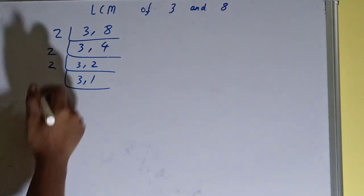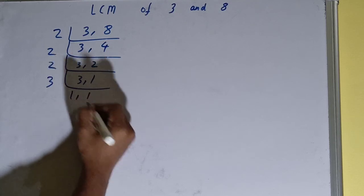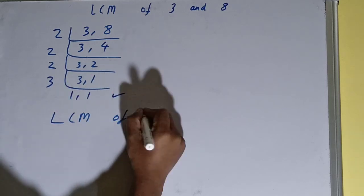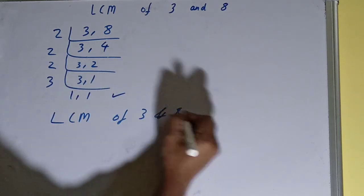And this is divisible by 3, so divide it. We'll be getting 1 comma 1. Once you get 1 comma 1, you need to stop and do one last thing. That is, LCM of 3 and 8 is equals to...